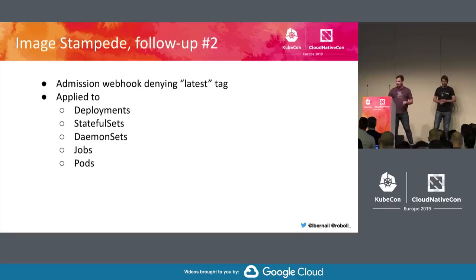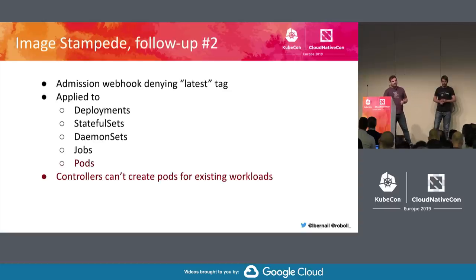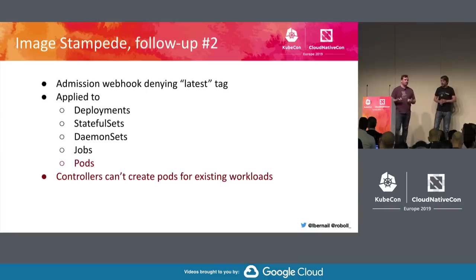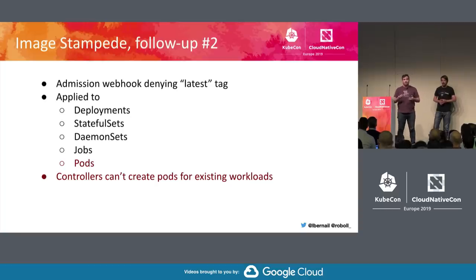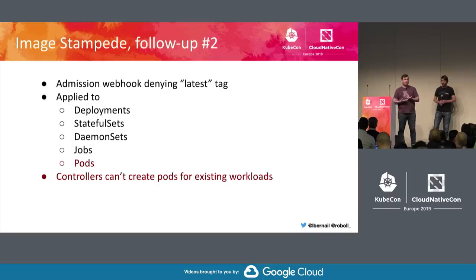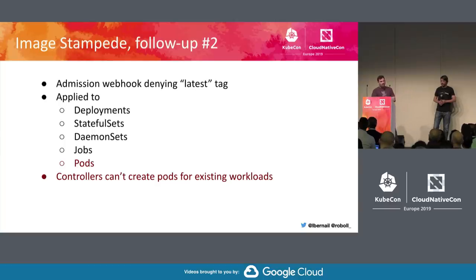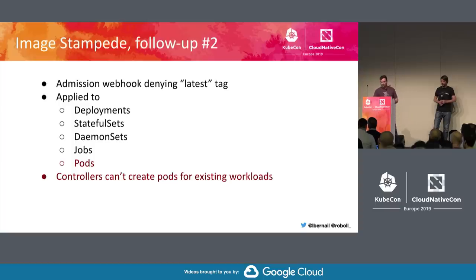The problem was that the control loop creating pods runs inside the cluster — no user involved when new pods are created. Existing deployments create new pods as nodes die and get rescheduled, or on scale-ups, and these pods were being rejected by the webhook. We were unable to schedule anything new. We adjusted the webhook to apply only to workload objects, not pod objects directly. Several days later we were finally back to normal.